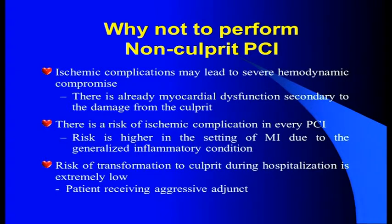The risk of transformation of a non-culprit lesion to a culprit vessel during hospitalization is extremely low. If you have an additional lesion, you are already giving a lot of anti-platelet agents and the possibility of a non-culprit lesion becoming culprit is low. Therefore, guidelines have advocated that we should not do a non-culprit vessel PCI.